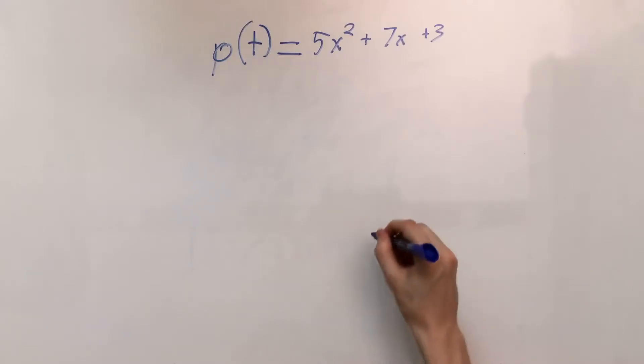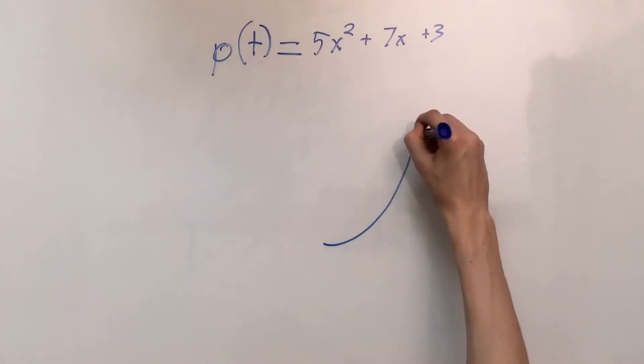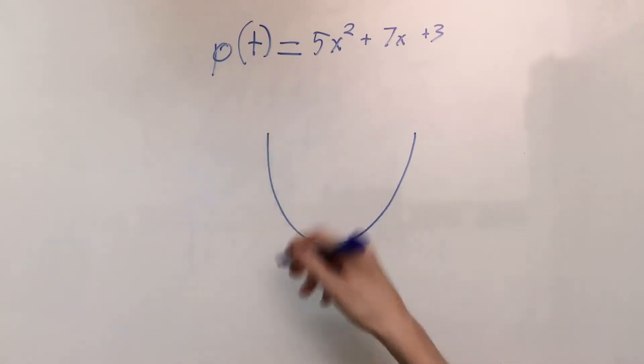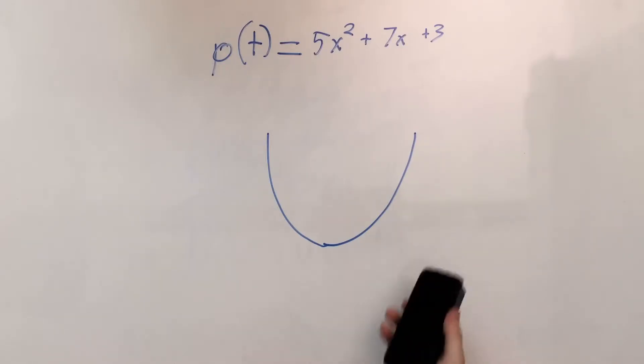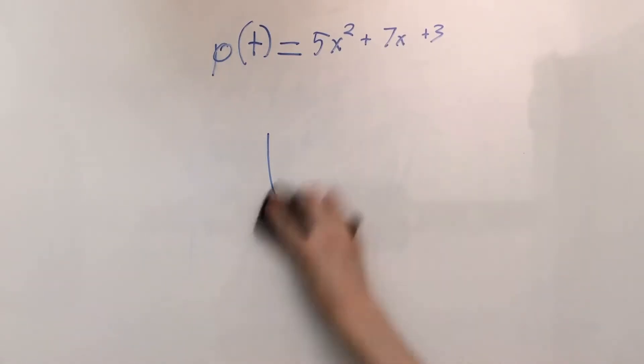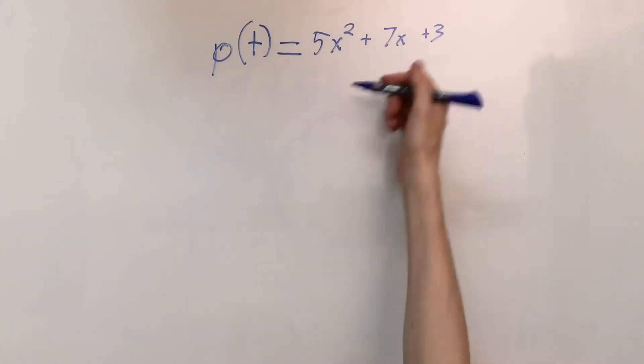And that would be the position function. So the graph of that would look something roughly like that. It would be an upwards facing parabola. Obviously it would be shifted around on the coordinate plane, but I'm not too worried about the specifics of that. We know that it's a parabola, so then we can simply find using the first derivative the velocity as time changes or for a specific time.